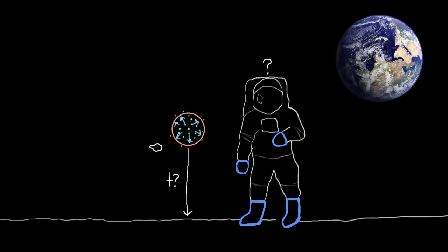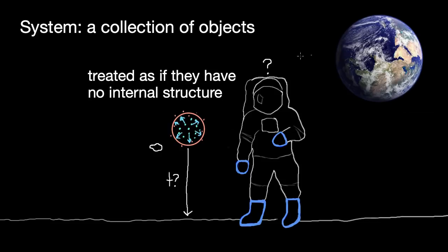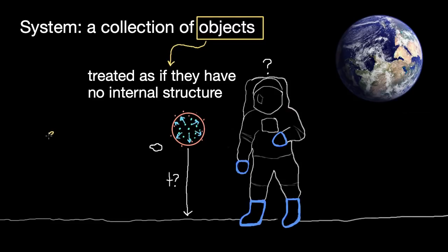In some questions, you get to ignore the internal structure; in others, you don't — it's context and question dependent. In physics, we have terminology to sort this out: the idea of a system or the idea of an object. A system is just a collection of objects. By an object, we mean anything you could treat as if it had no internal structure. The only things that truly have no internal structure, as far as we know, are fundamental particles like electrons or neutrinos.